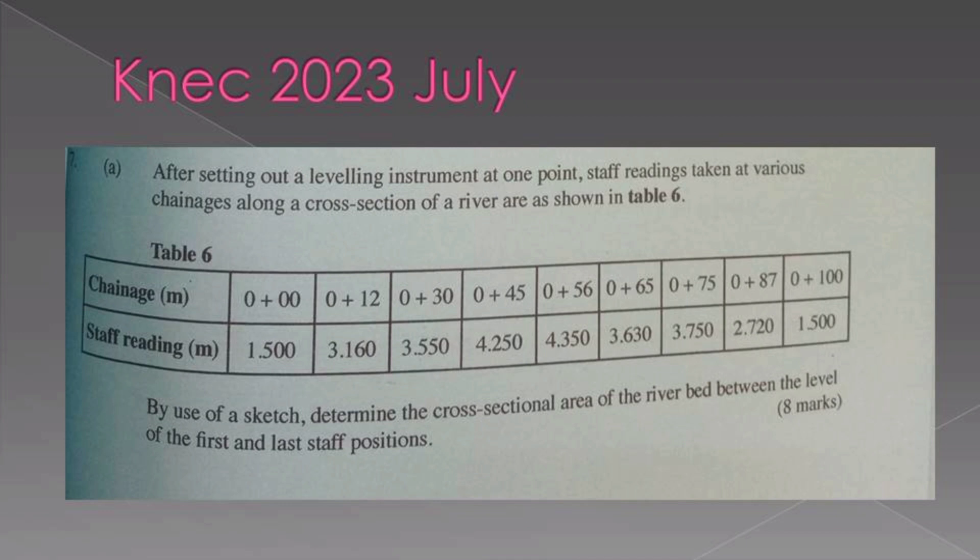And the last to 100. There's a varying distance. Those are staff readings produced. This seems like a question in leveling, a first year topic. They have decided because you have that knowledge you can tackle this question anyway. By use of a sketch, determine the cross-sectional area of the riverbed between the level of the first and the last staff point.